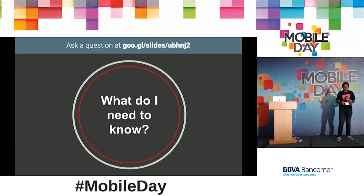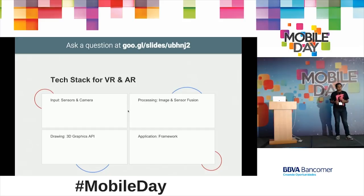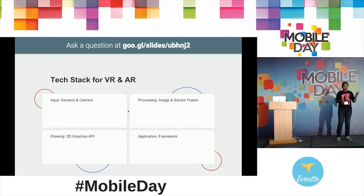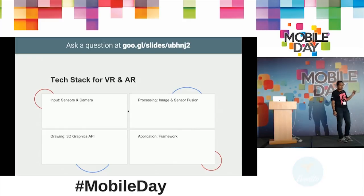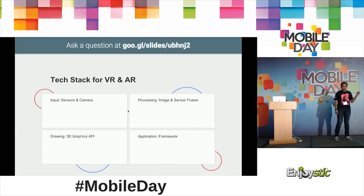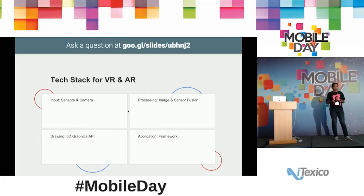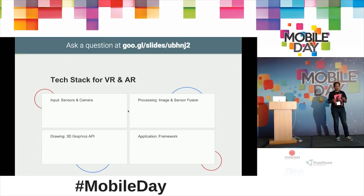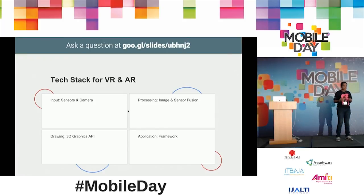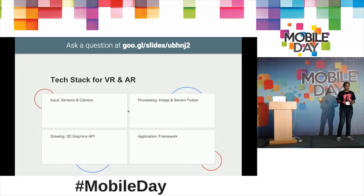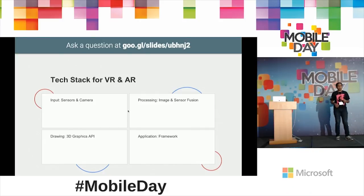The tech stacks of VR and AR revolve around four areas: input sensors and cameras, processing done in the phone or device, drawing in your VR head-mounted displays, and application frameworks where you build the application. We are mostly going to concentrate on frameworks today, but I will touch on all of them a little bit.